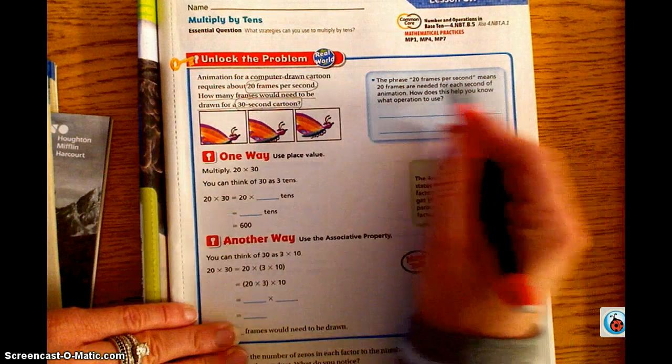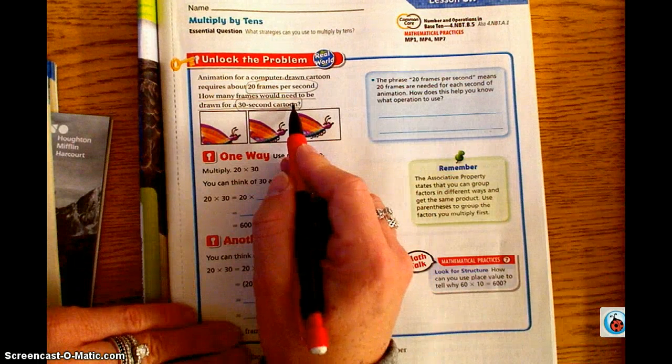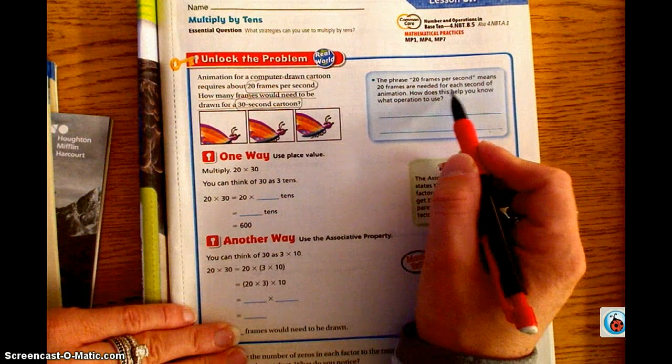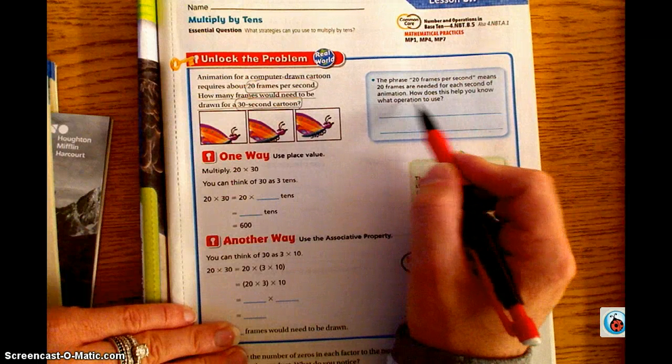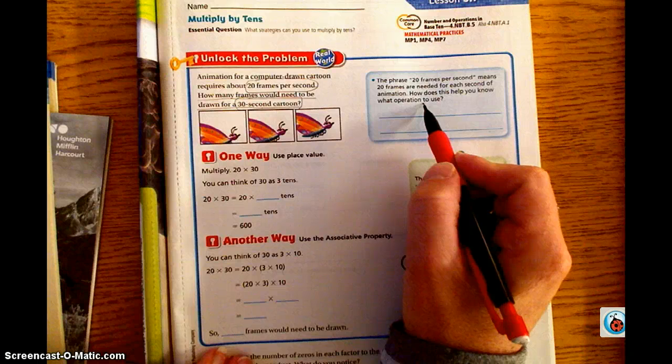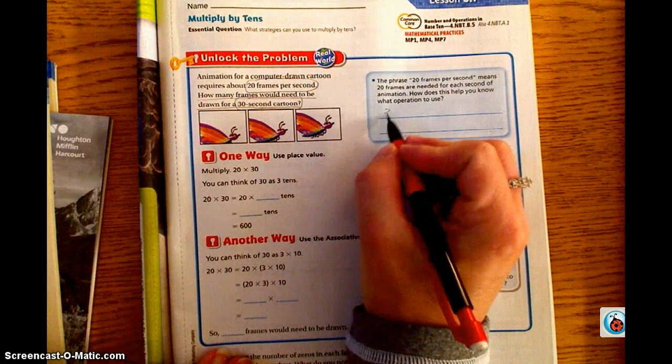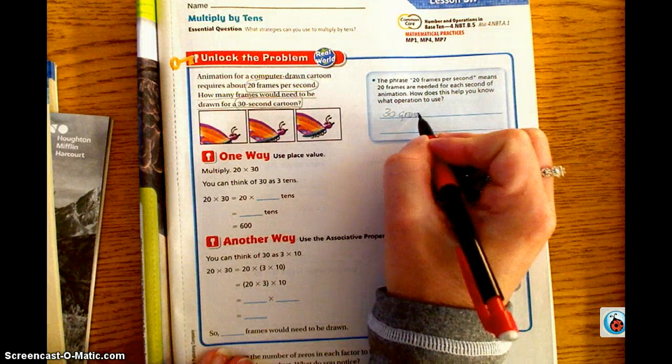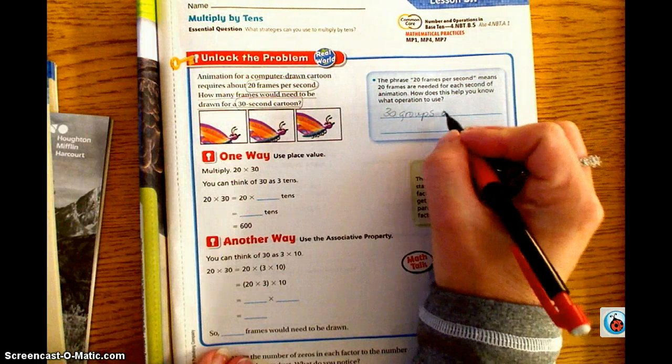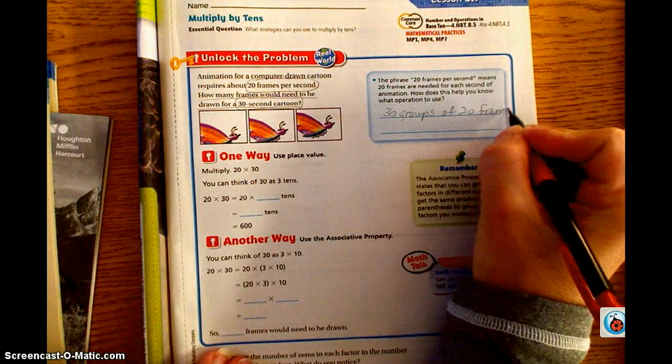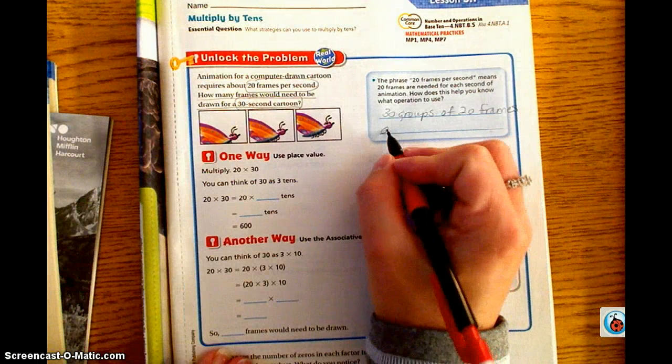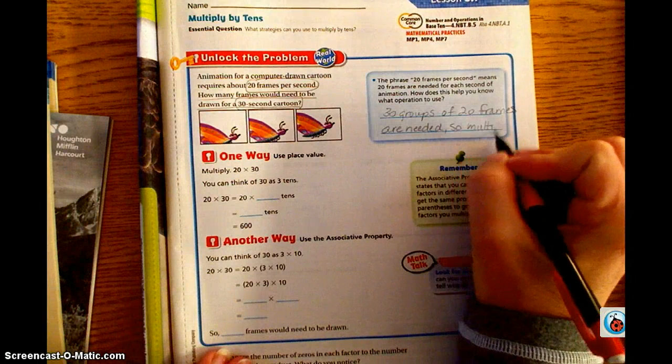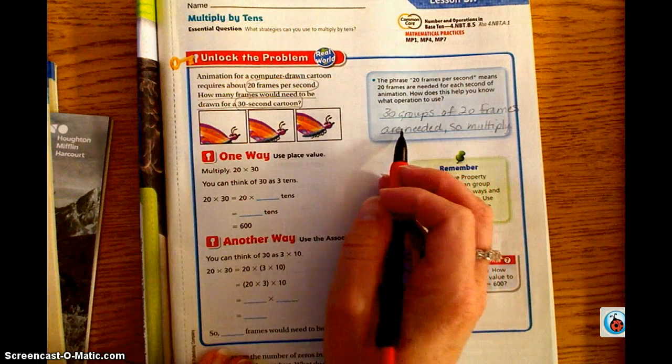In the blue box it gives you some more hints to help you identify what operation you're going to need to use. The phrase 20 frames per second means 20 frames are needed for each second of animation. How does this help you know what operation to use? We can identify that 30 groups of 20 frames are needed because it's 20 frames per second and we have 30 seconds. So we're going to multiply.